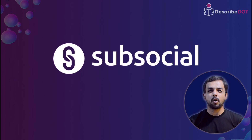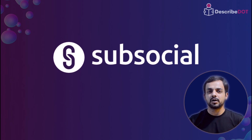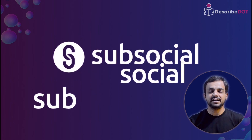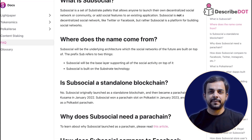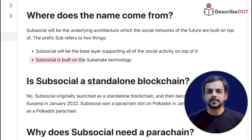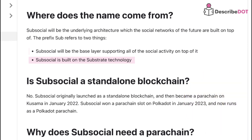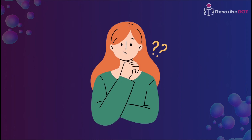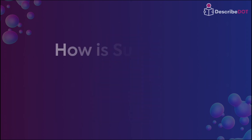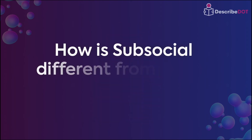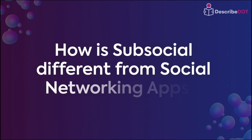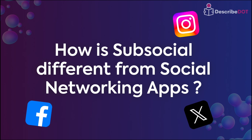SubSocial's name is a combination of two words: Sub and Social. Because it's built on a Substrate-based chain, it's called Sub, and because of its social networking features, it's called Social. Now the question arises: how is SubSocial different from social networking apps like Facebook, Twitter, and Instagram?